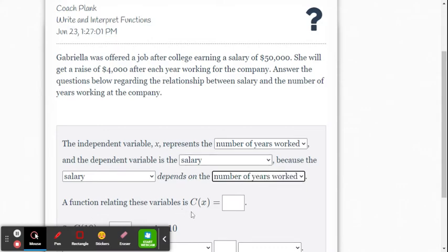So now write a function relating the variables, C of X. So our annual salary is going to be $4,000 times X, the number of years that you worked, plus your original $50,000. So you could also write this as $50,000 plus $4,000X. It doesn't matter the order.